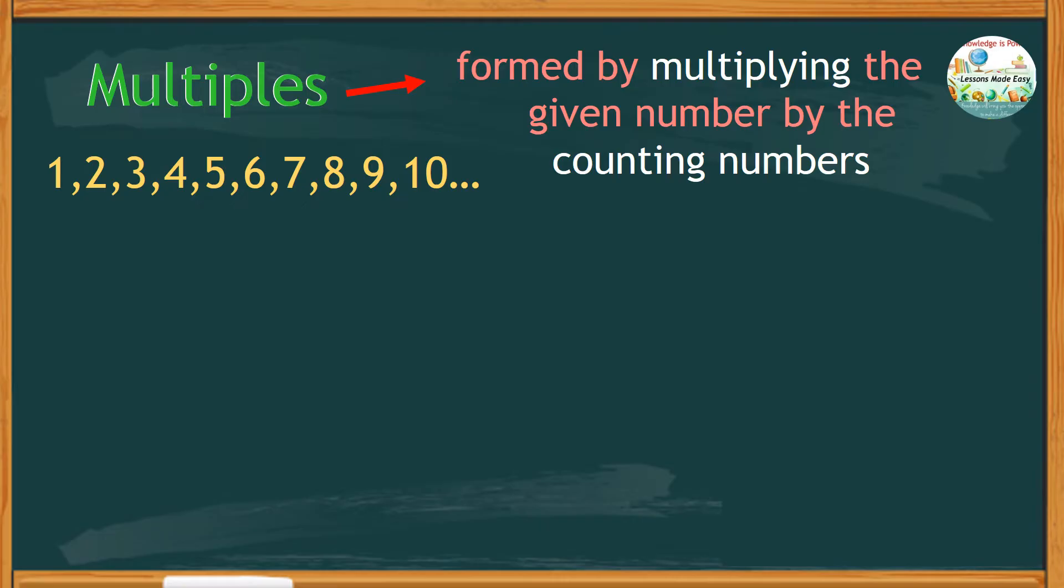So suppose we are looking for the multiples of 6. It's just like looking at the 6 times table. Starting with 6 times 1 equals 6, 6 times 2 equals 12, 6 times 3 equals 18, 6 times 4 equals 24.